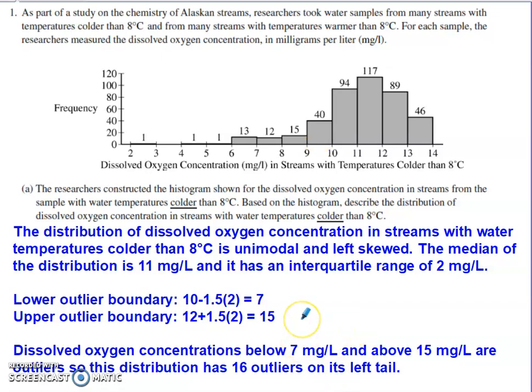In part A, they ask us to describe the distribution. If you're asked to describe a distribution, there are definitely some things that you have to hit on in order to receive maximum points on the stats exam: shape, outliers, center, and spread. I went ahead and looked at this and it obviously has this one peak right here, so I said that this is going to be unimodal. I also said it's left skewed—we have the tail of the data working its way outward to the left here.